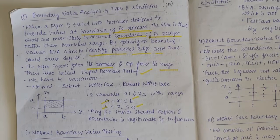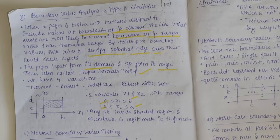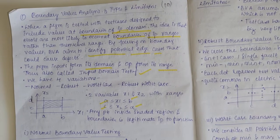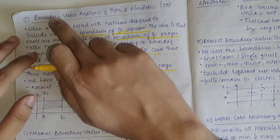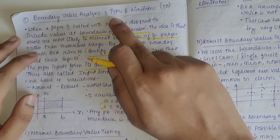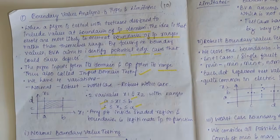In this video we'll be looking into the important concepts of the second module, that is functional testing of the software testing subject. Starting from the second module, we have three standard topics: three types of functional testing. The first one being boundary value analysis. Boundary value analysis — its types and limitations — could be asked for 10 marks.